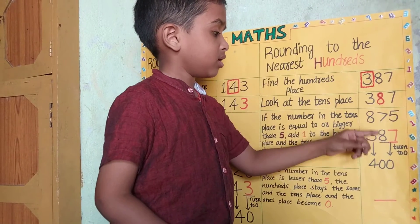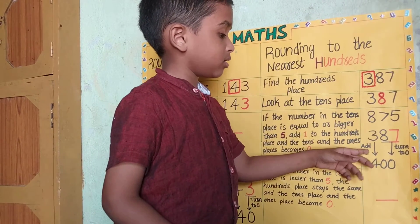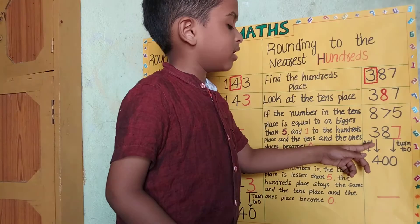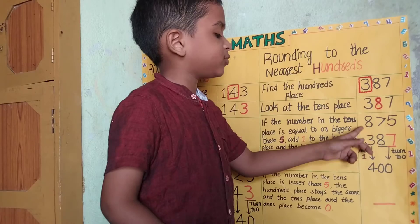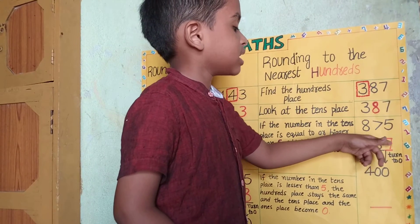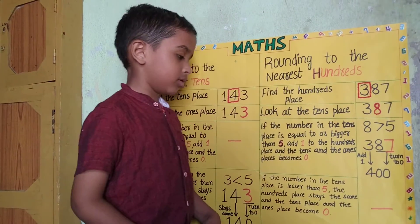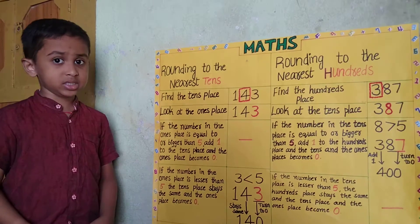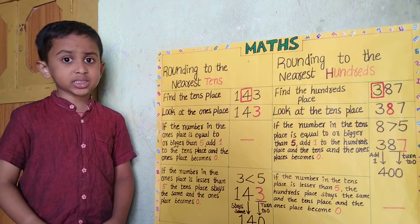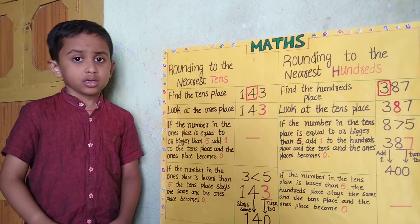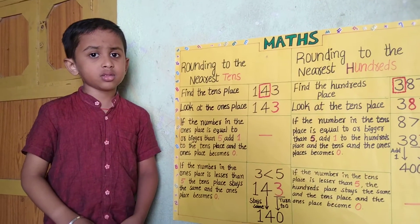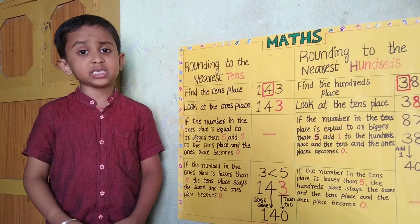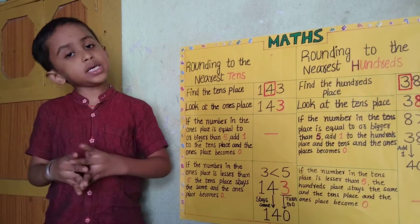Here the tenth place is bigger than 5, so we have to add 1 to the hundredth place and the tenth becomes 0. If the number in the tenth place is less than 5, the hundredth place stays the same and the tenth becomes 0.